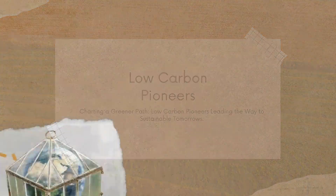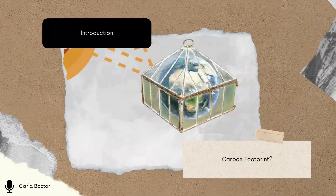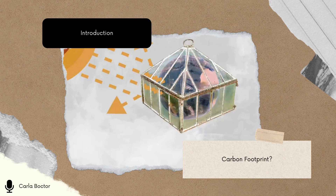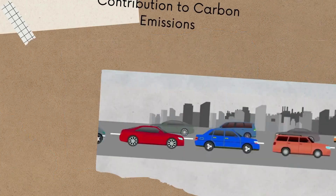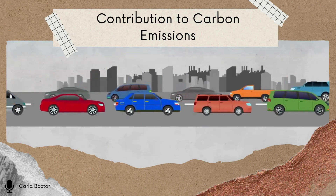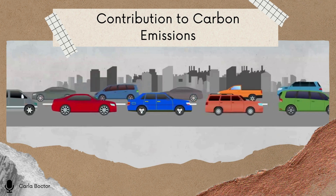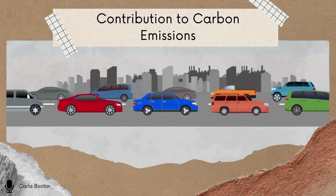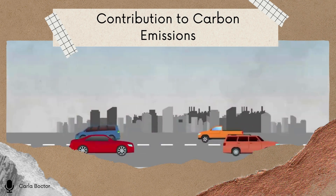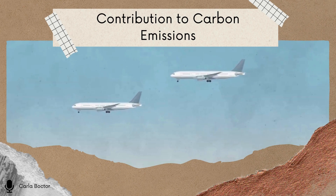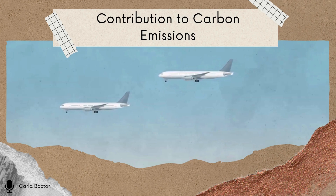Greenhouse gases trap heat into the atmosphere, and that's overheating the planet. In particular, transport is a big part of your carbon footprint. Cutting down on your use of petrol or diesel cars and taking fewer flights is one of the most effective ways of reducing it.